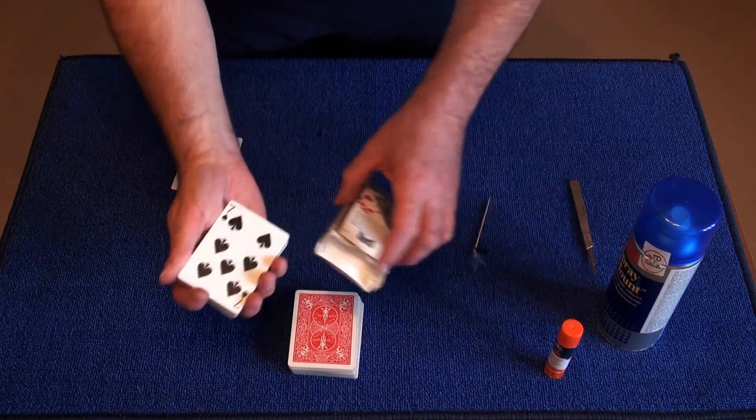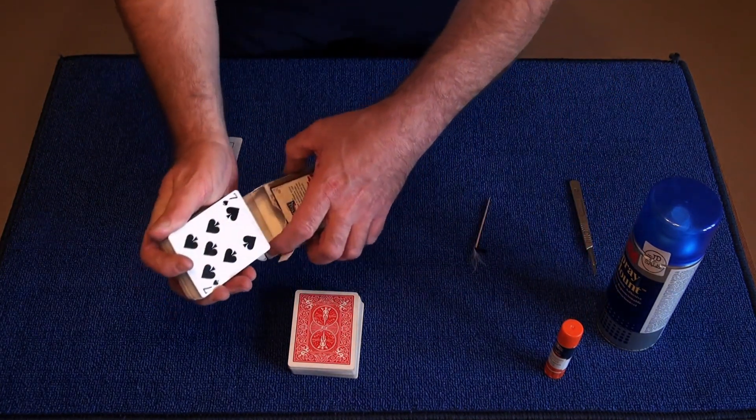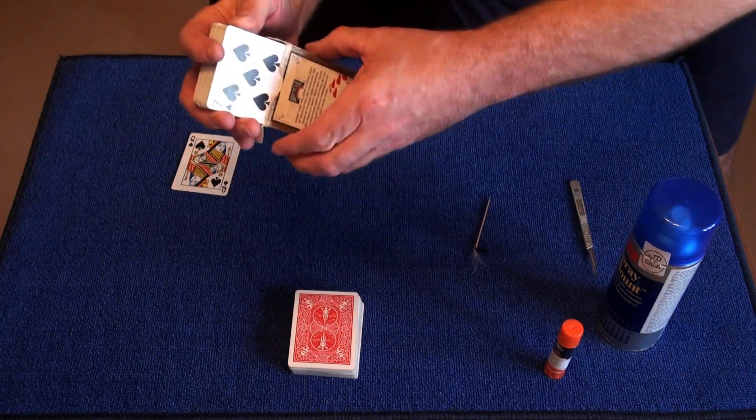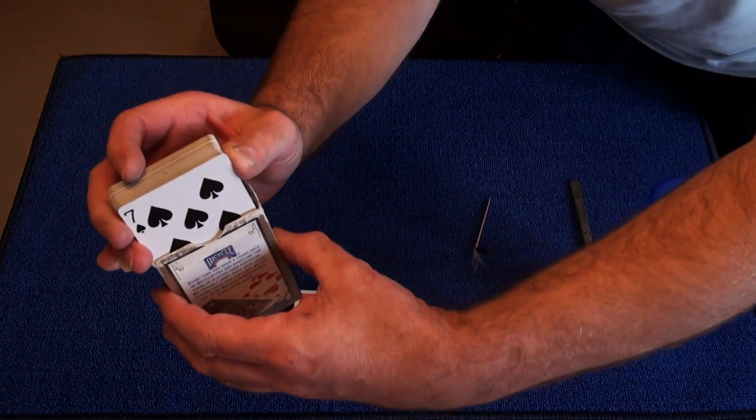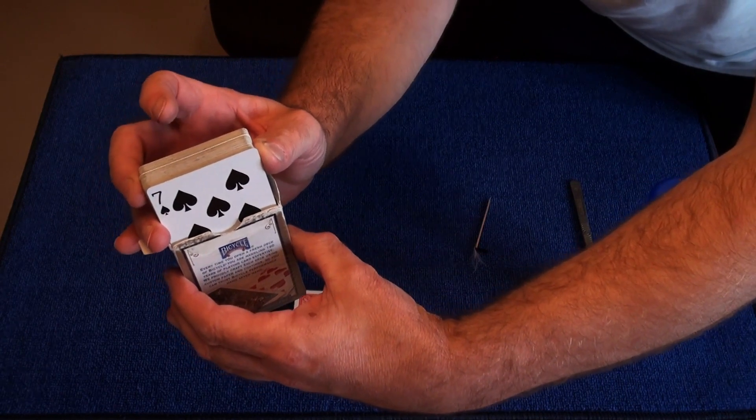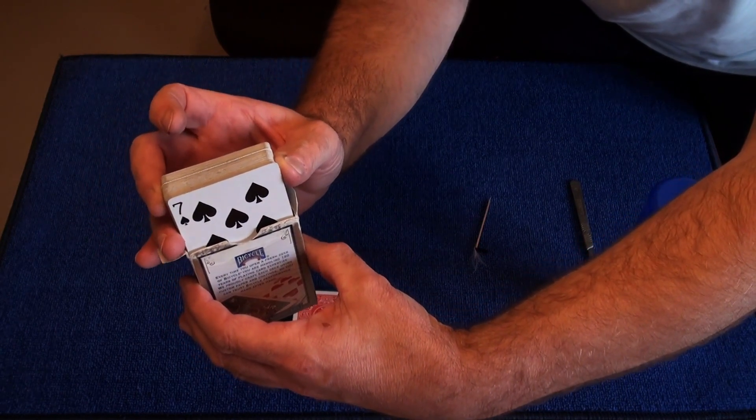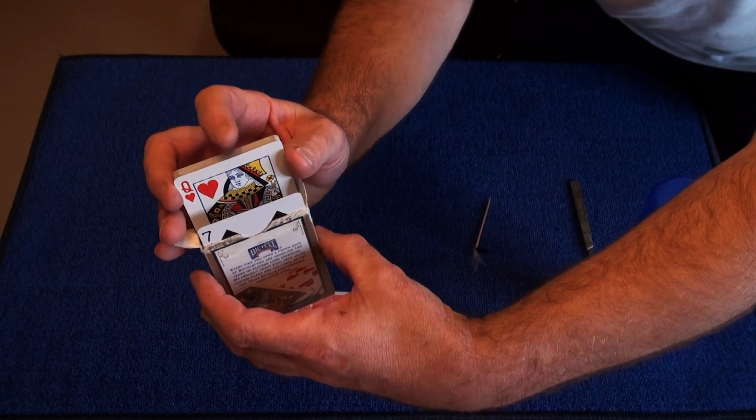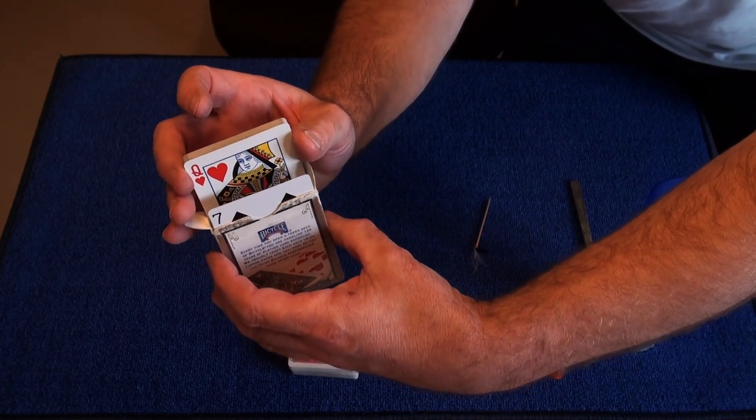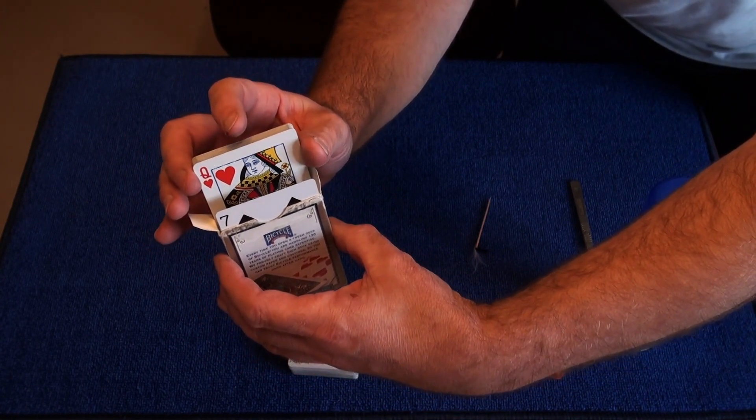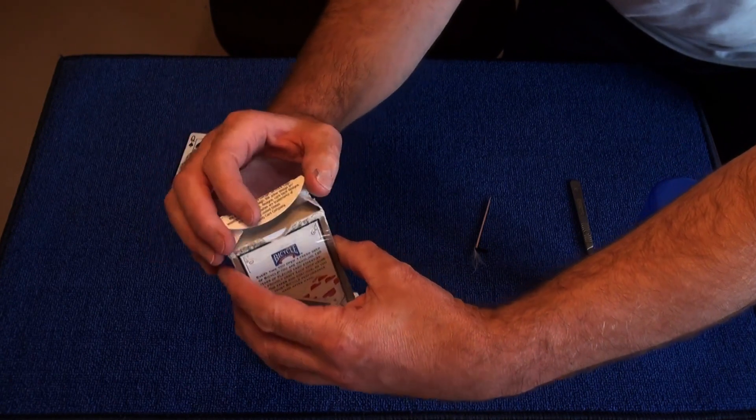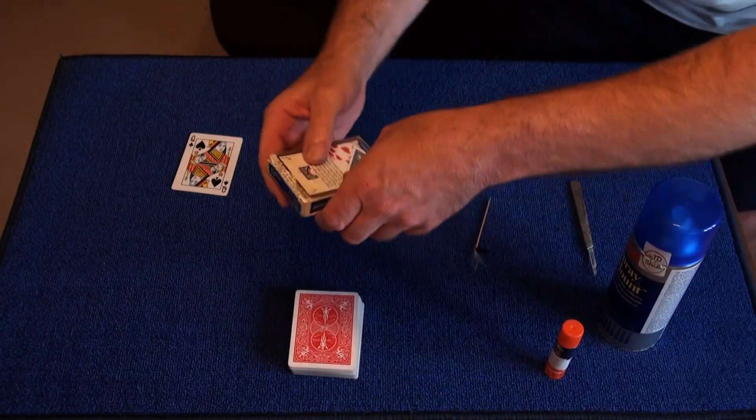And I slid the deck into the box. I'm just going to give you an expose for you now. As I slid it in, I grabbed the edges of the wider card, and as I dropped the front portion of the deck in, you get a glimpse of the chosen card, the Queen of Hearts. That's how it was done. And I just closed the box like so. So now I know it's the Queen of Hearts.